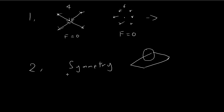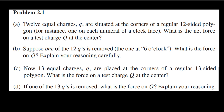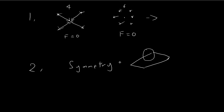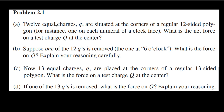By a similar symmetry argument, for this symmetrical setup of 12 charges, there is no reason why the net force should be leaning in either direction. So that's why the net force has to be equal to zero. These are two different reasons why, for part A, the net force is equal to zero.